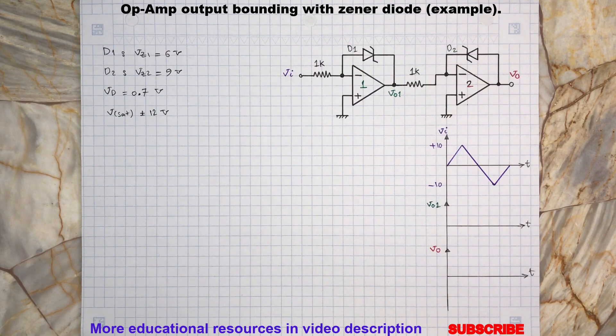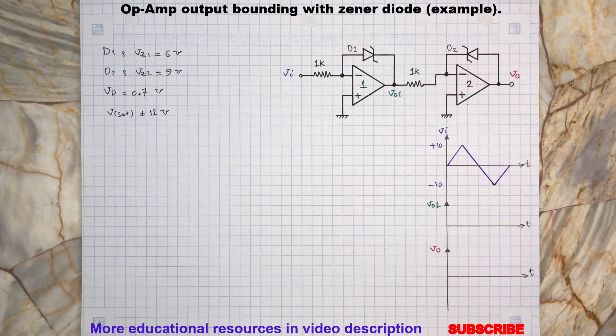This will lead the output V01 to swing to the negative saturation threshold, which is minus 12 volts. The reason for this is because the op-amp non-inverting terminal V+ is grounded, so the potential difference between V- and V+ terminals is negative.